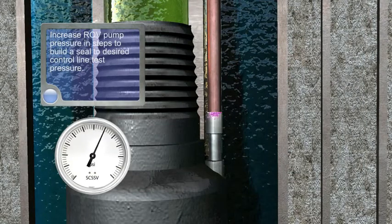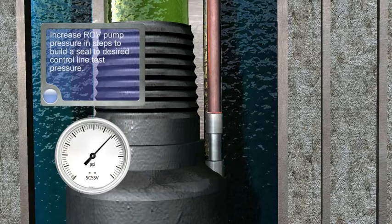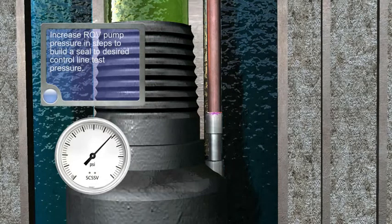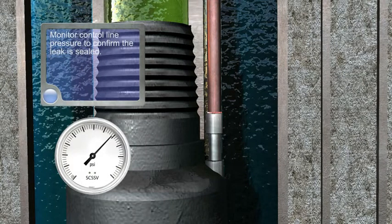Increase ROV Pump Pressure in Steps to Build a Seal to Desired Control Line Test Pressure. Monitor Control Line Pressure to Confirm the Leak is Sealed.